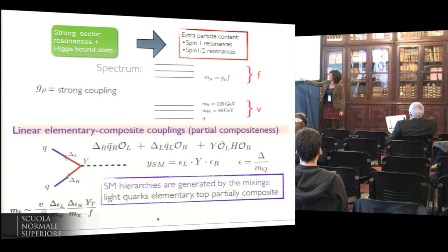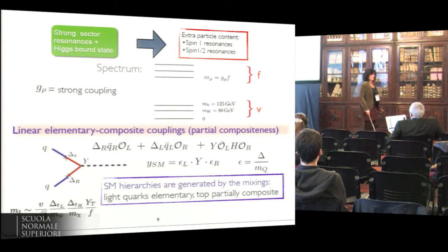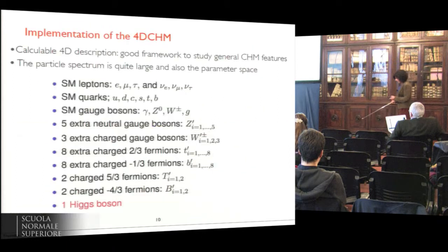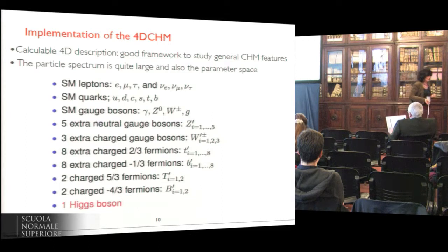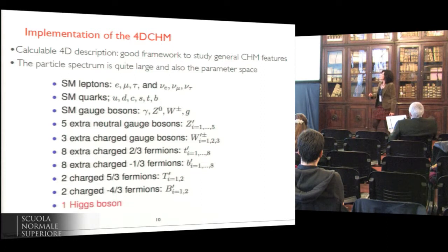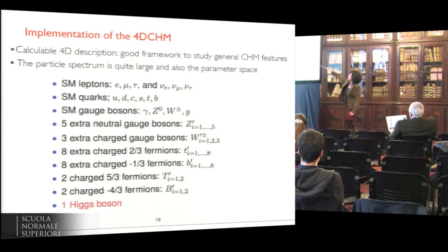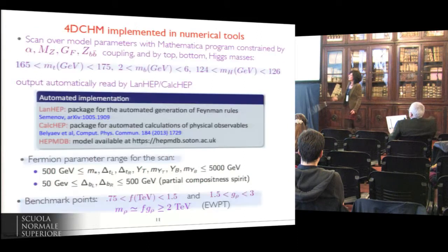For example, the mass of the top is given by the Yukawa coupling which comes from the mixing of the top with the extra fermions. Having this scheme, the first question we ask is whether it can describe the Higgs-like particle seen at the LHC. But in order to do this, it is necessary to implement this model in a tool, because the spectrum is quite large — it describes five extra neutral gauge bosons, three charged bosons, and 20 extra fermions.